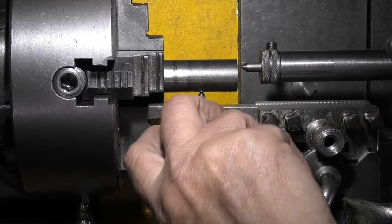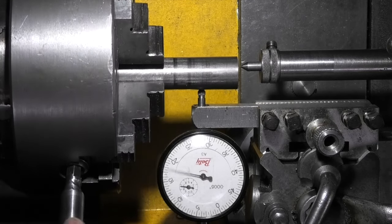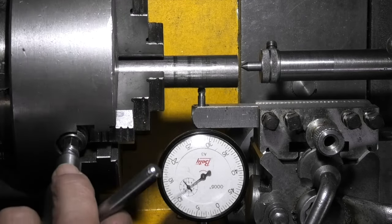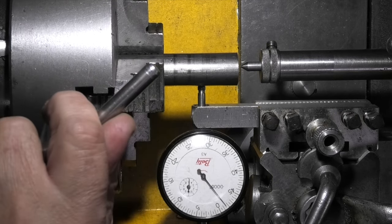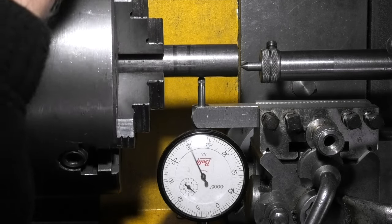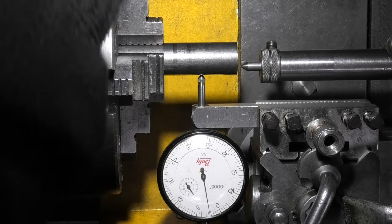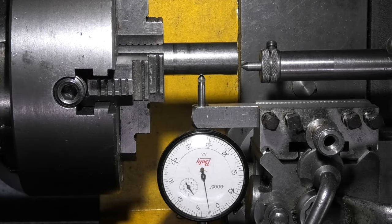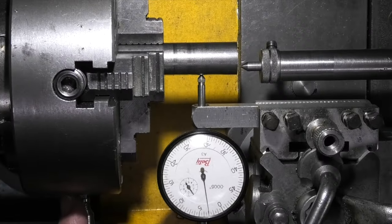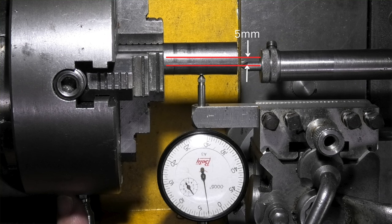Okay so that's zero there. So I've moved it off by one, two, three, that's four, five, six, seven, eight. So that's four hundred thou roughly. That's four hundred on the diameter but the offset is 200 which is around five millimeters.